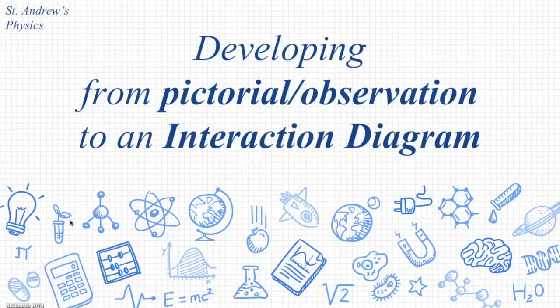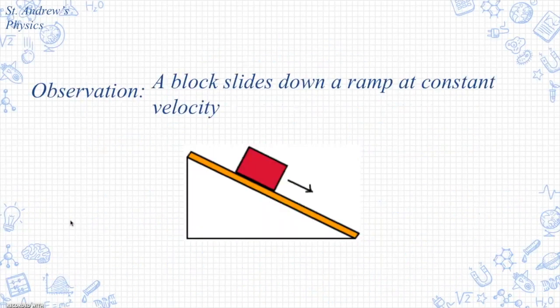In this quick video I'm going to show developing from an observation or picture to an interaction diagram. We'll start with an observation or a picture, and in this case I have a block sliding at constant velocity down a ramp.